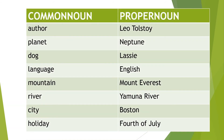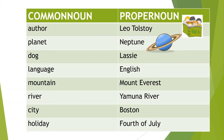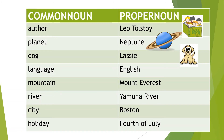Let's look at another chart. Author is a common noun, Leo Tolstoy is a proper noun. Planet is a common noun, Neptune is a proper noun. Dog is a common noun, Lassie is a proper noun. Language is a common noun, English is a proper noun. Mountain is a common noun, Mount Everest is a proper noun.